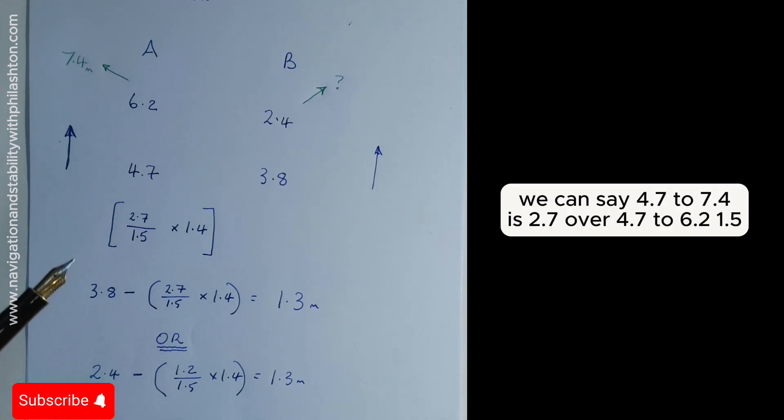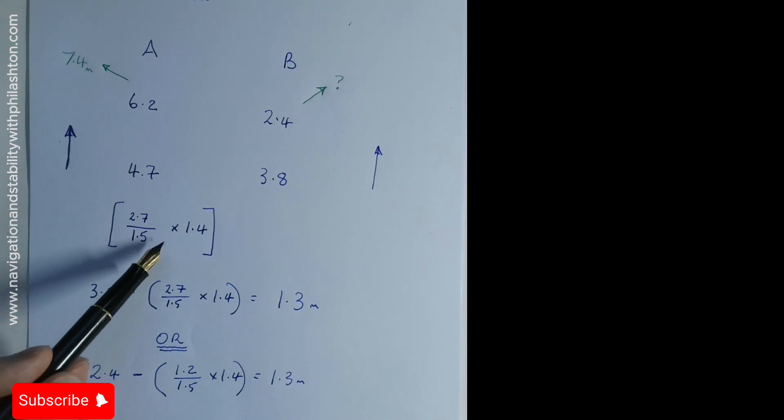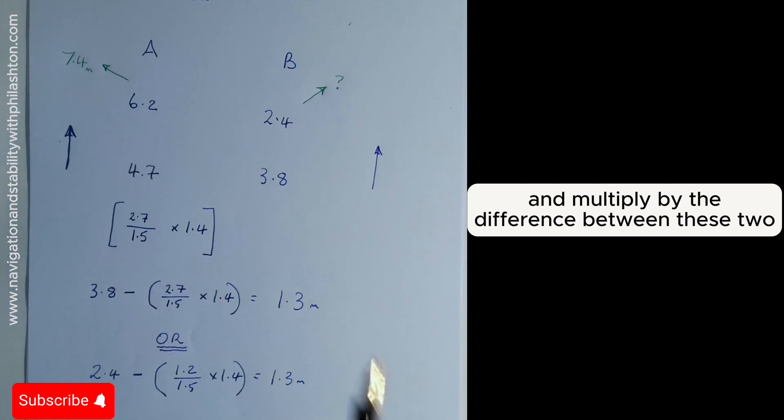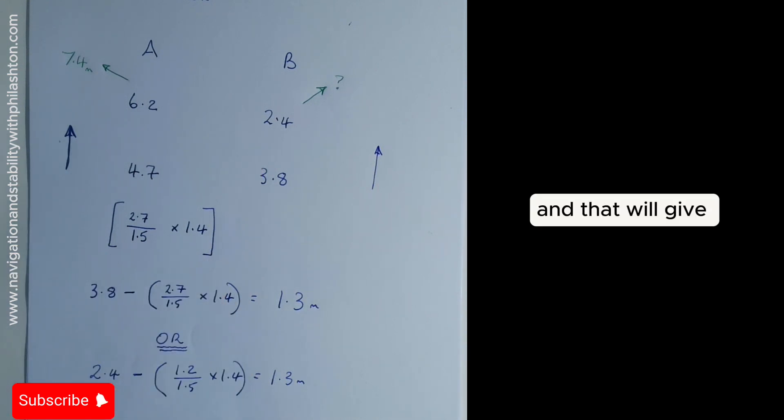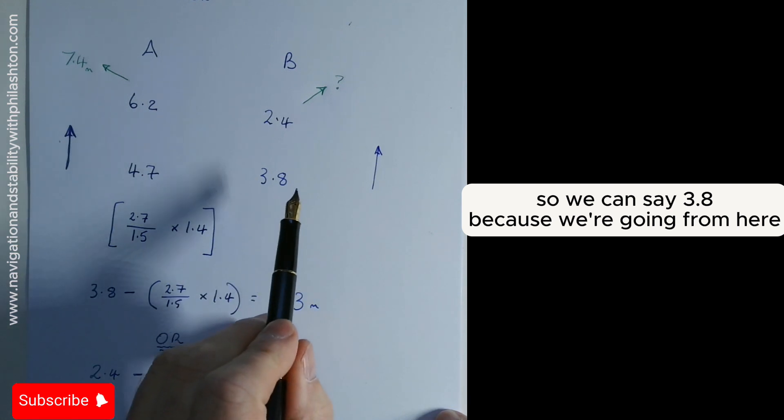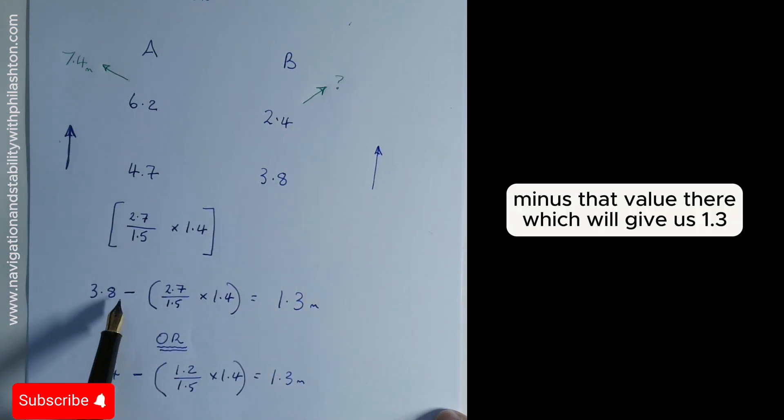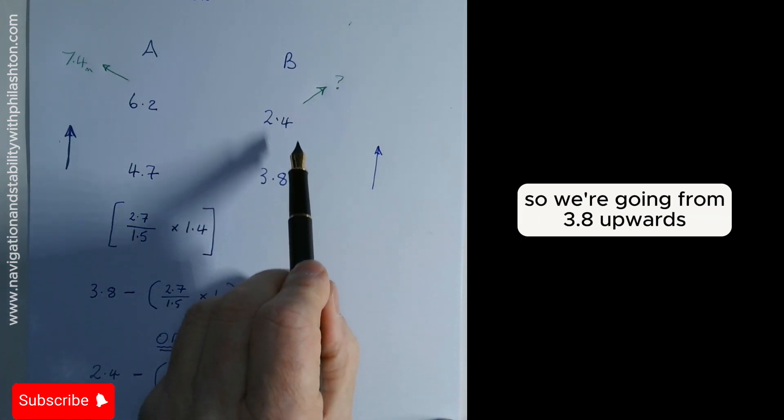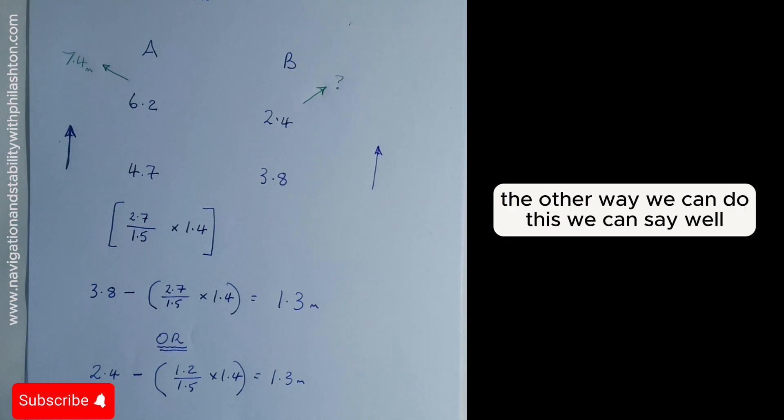We can say 4.7 to 7.4 is 2.7 over 4.7 to 6.2, which is 1.5, and multiply it by the difference between these two. That will give us a fraction. So we can say 3.8, because we're going from here, minus that value there, which will give us 1.3. So we're going from 3.8 upwards.